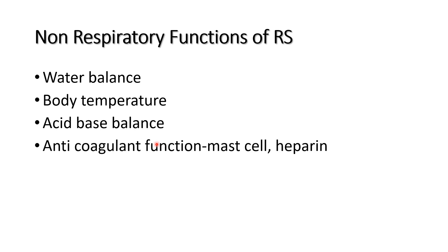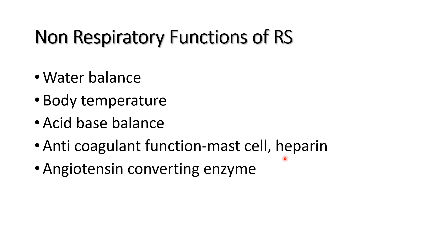The mast cells present in the respiratory tract produce heparin, which provides an anticoagulant function. The respiratory system also applies fibrinolytic agents, and the pulmonary capillary endothelium produces angiotensin-converting enzyme.